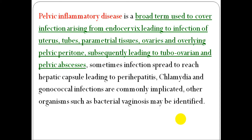PID is a broad term used to cover infection arising from the endocervix, leading to infection extending to the uterus, tubes, parametria, and ovaries, and the overlying pelvic peritoneum, subsequently leading to tubo-ovarian pelvic abscess. Infection can spread to the hepatic capsule leading to perihepatitis. Chlamydia and gonococcal infection are common complications, and other organisms such as bacterial vaginosis may be identified.